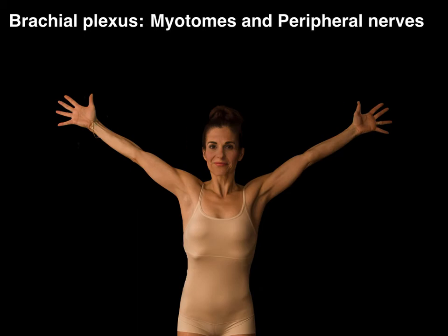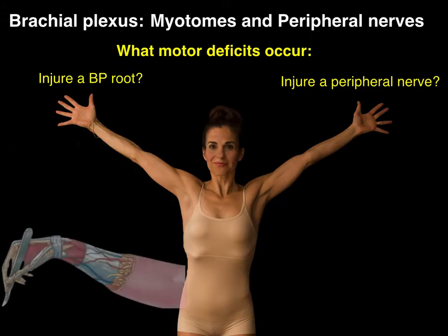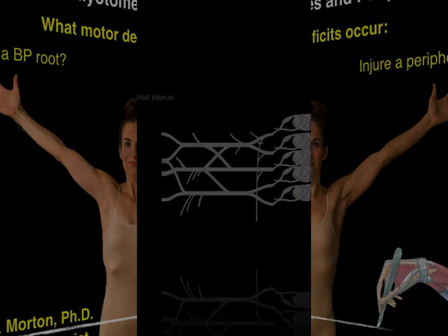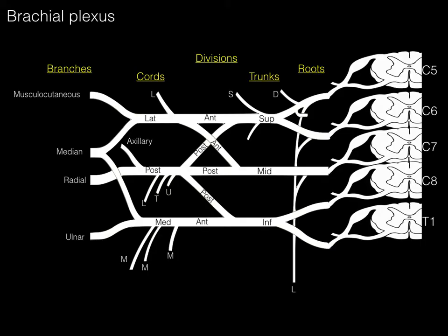We're going to talk about myotomes and peripheral nerves and answer the question: what motor deficits occur when you injure a root of the brachial plexus in contrast to injuring a peripheral nerve? Hello everyone, my name is Dr. Morton and I'm the noted anatomist. A basic understanding of the brachial plexus will be necessary, and if you need help, look at the link below for a tutorial on the overview of the brachial plexus.